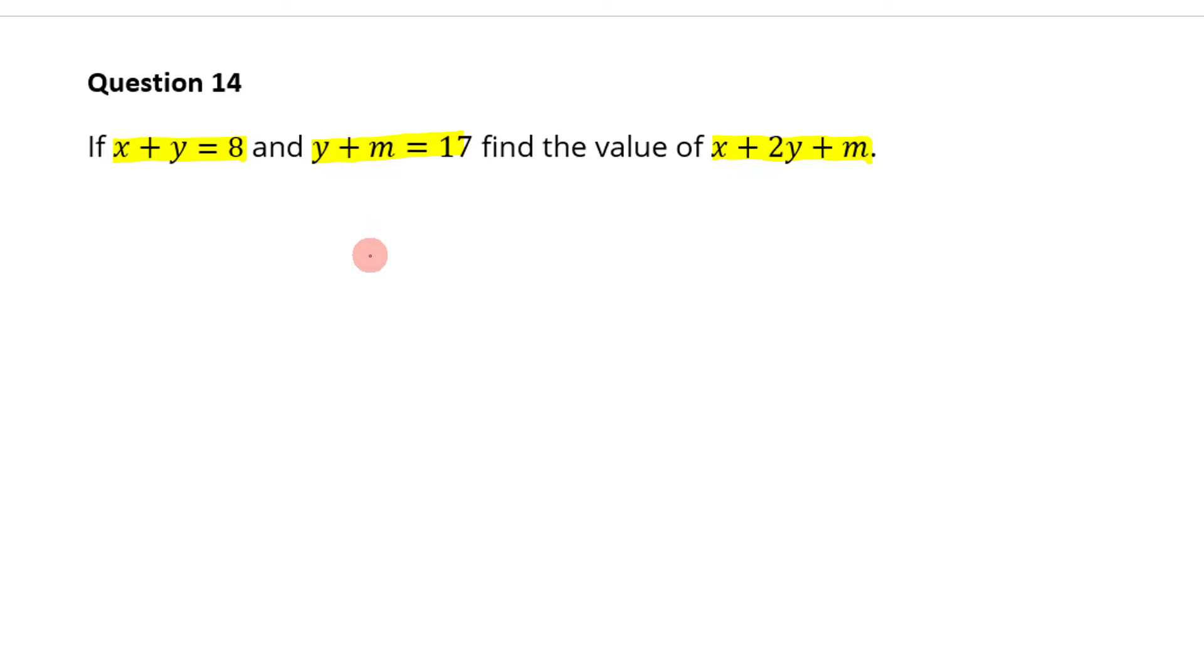so let's come over here and see if we can do it. What will we do here? Okay, the first thing that I notice here is that I've got x plus 2y plus m. And do you see over here, I've got x, I've got y, I've got y, I've got m. So what I would want to do is I would want to take this and add it to this.